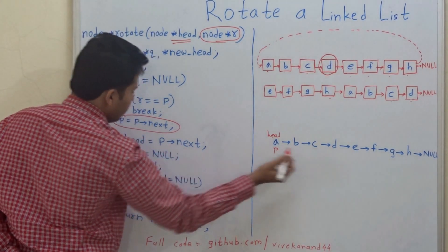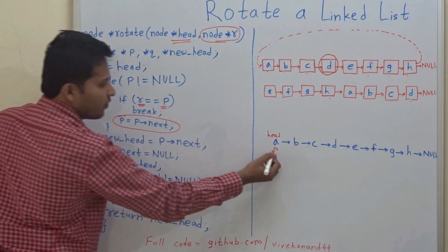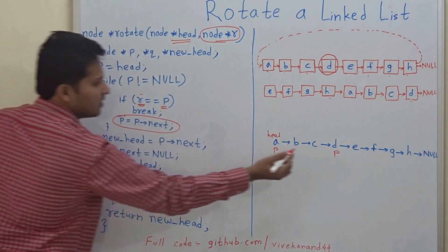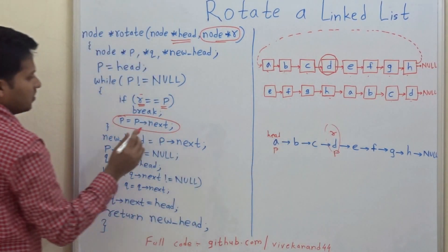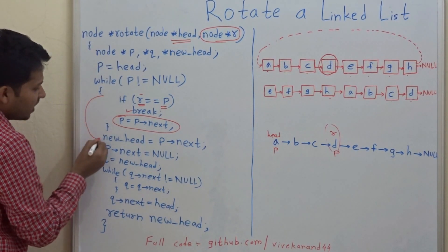So we will go up to D and when the rotating node matches P, when P points to D, that is R, then we will break. We will break out of this while condition.